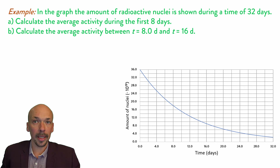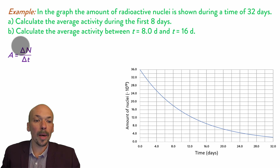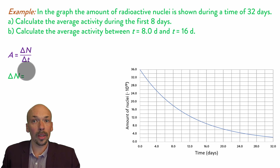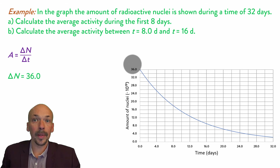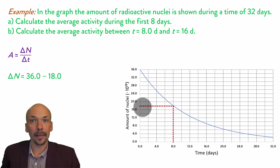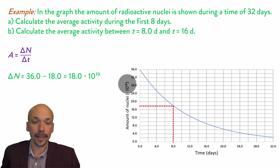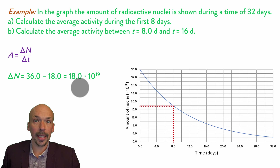We will first answer question a. We will use the graph to determine the amount of decayed nuclei and the amount of time. For the number of decayed nuclei: the question asks for the activity during the first 8 days, so we start at time 0 where we see 36, and at time 8 days we can read it is 18. So we do 36 minus 18, which equals 18 — don't forget, times 10 to the power of 19. This is the amount of nuclei that have decayed in the first 8 days.